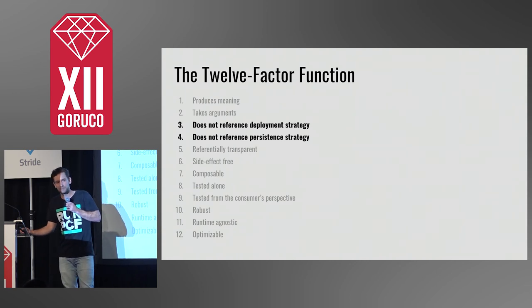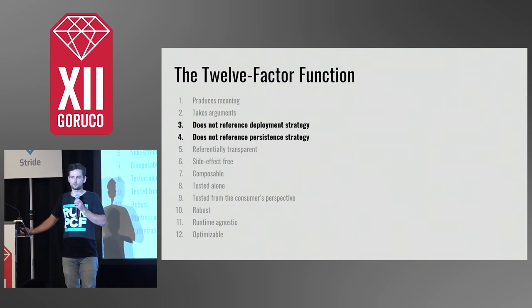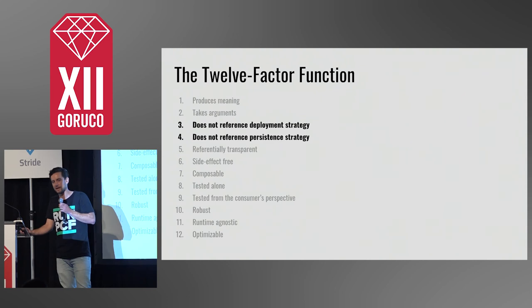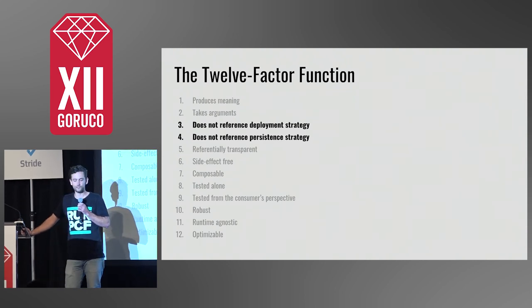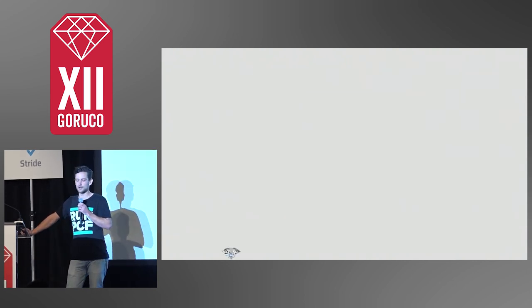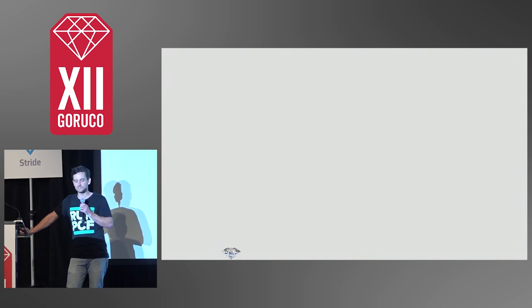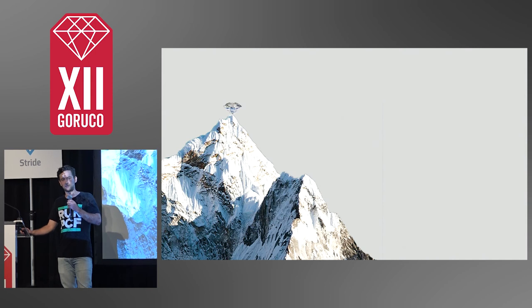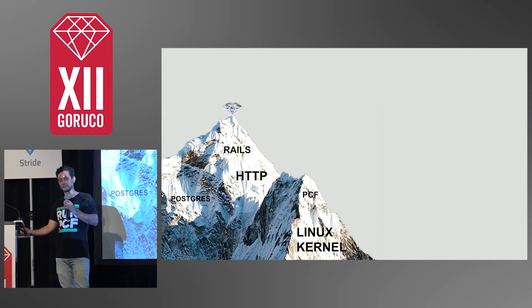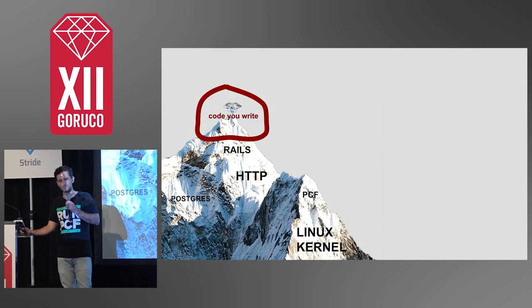By decoupling meaning and magic, I can mix and match my meaningful functions with different information-gathering shells. Meaningful functions may be a tiny part of the code that gets executed at runtime. If you're careful, however, they could be a large part of the code that you write.